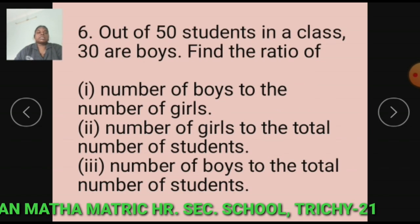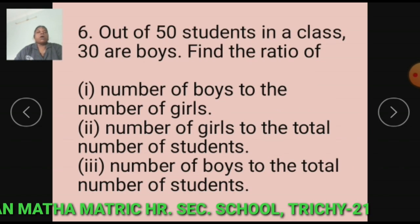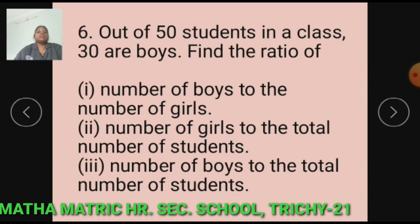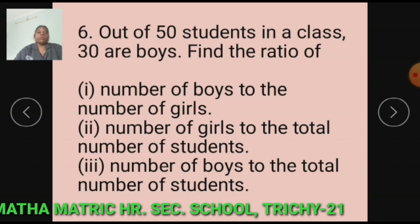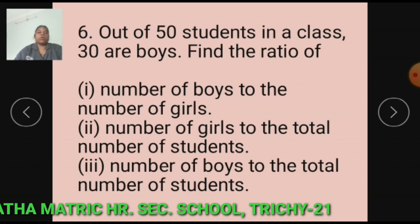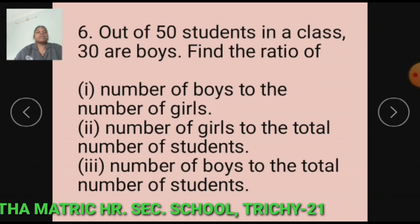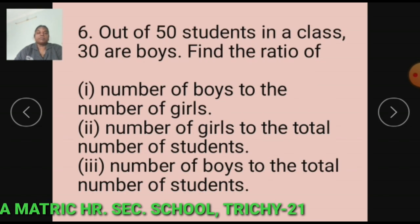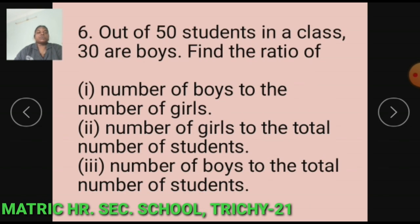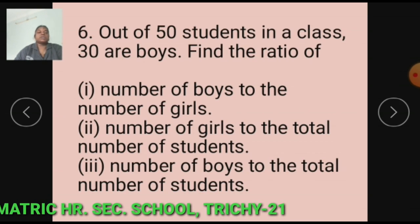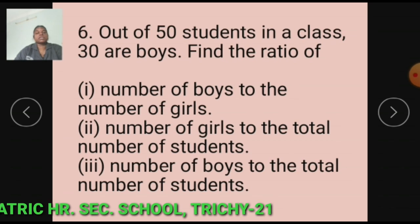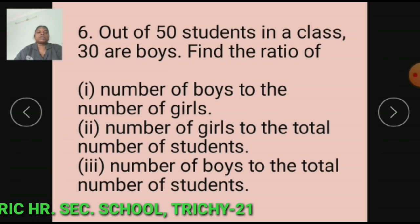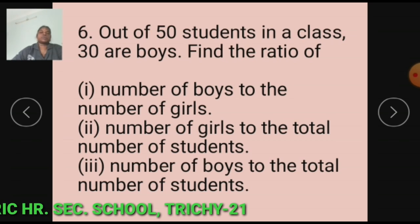Question number 6. Out of 50 students in a class, 30 are boys. Find the ratio of: subdivision 1, number of boys to the number of girls; subdivision 2, number of girls to the total number of students; subdivision 3, number of boys to the total number of students.